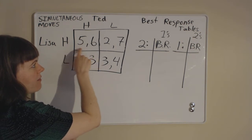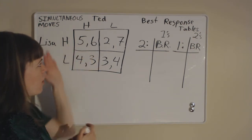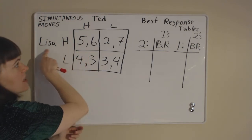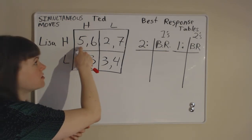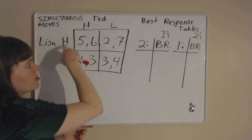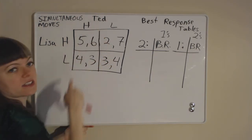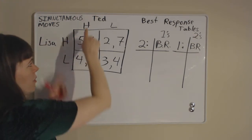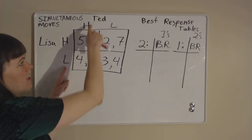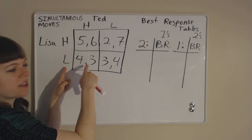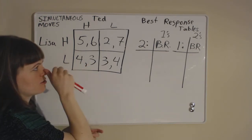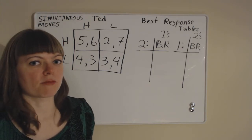In each box we have two payoffs, and they go from left to right — player one, Lisa, gets five dollars or utils if both players choose high, and Ted gets six dollars or utils if both players choose high. If Lisa chooses low and Ted chooses high price, then Lisa gets four and Ted gets three. That's how you read a payoff matrix.